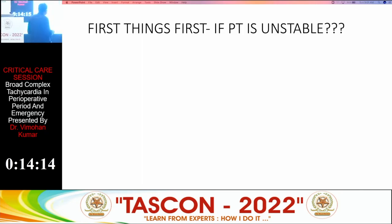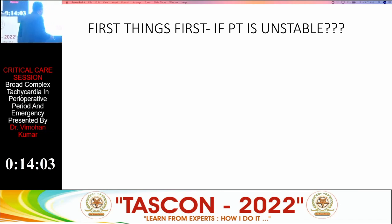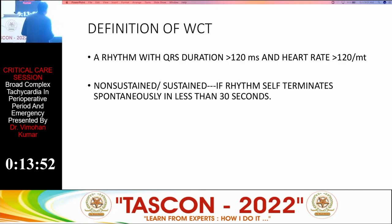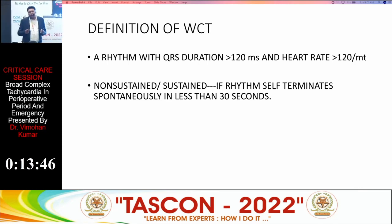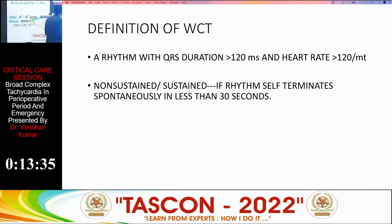First things first: if a patient is hemodynamically unstable with broad complex tachycardia — having chest pain, ongoing ischemia, or heart failure with broad complex tachycardia which is irregular — give synchronized shock followed by amiodarone. The definition of broad complex tachycardia is a rhythm with a rate more than 120 per minute and QRS duration of more than 120 milliseconds. If it lasts more than 30 seconds it is sustained ventricular tachycardia; if it terminates within 30 seconds it is non-sustained tachycardia.